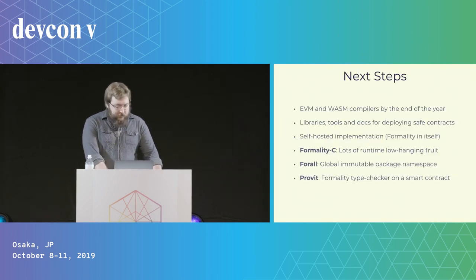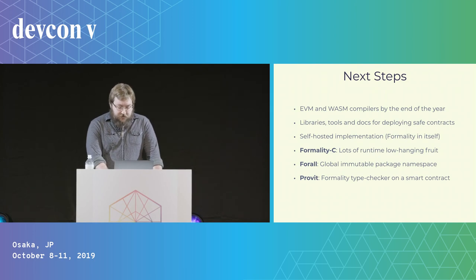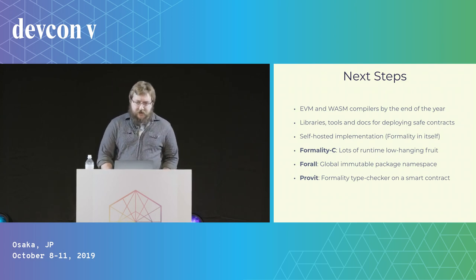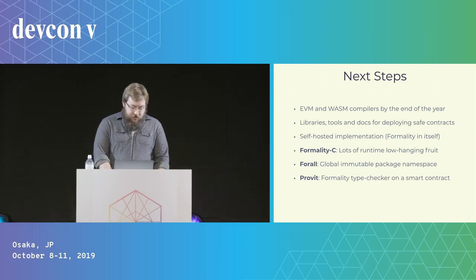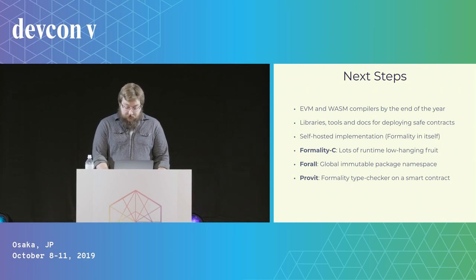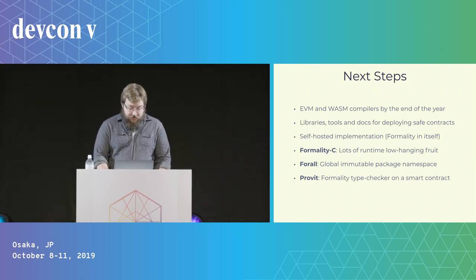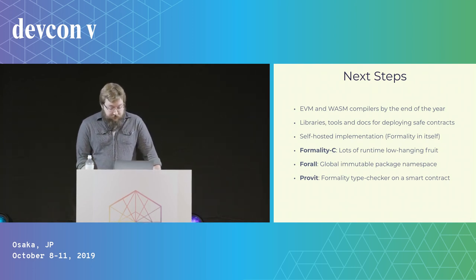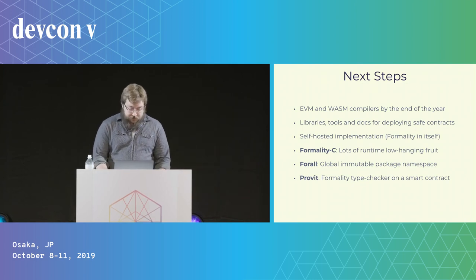Our next big priority, now that the language is pretty stable, is to write the compilers that will let us deploy Formality smart contracts and to continue maturing the libraries, tools, and docs to make that a really great user experience. After that, implementing Formality in itself will improve portability even further, and we're going to see how fast we can push the existing C implementation. The two projects after that are going to be our package management infrastructure and putting the Formality type checker on an Ethereum contract.